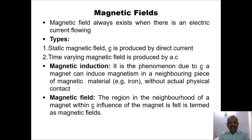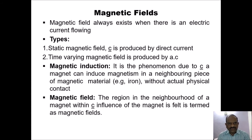First we will study the magnetic field. A magnetic field always exists when there is an electric current flowing. There are two known types of magnetic field: static magnetic field, which is produced by direct current, and time-varying or dynamic magnetic field, which is produced by alternating current. Magnetic induction is the phenomenon by which a magnet can induce magnetism in a neighboring piece of magnetic material, for example iron, without actual physical contact.